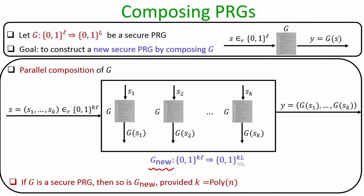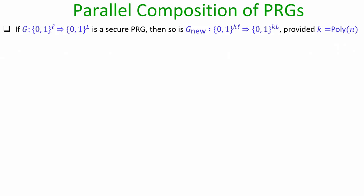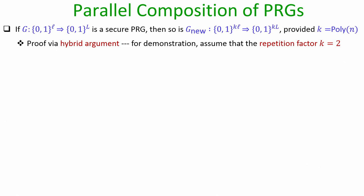We want to prove that if k is a polynomial function of the security parameter n, and if the existing algorithm G is a secure PRG (by either the indistinguishability-based definition or next bit predictor definition), then the new algorithm G_new obtained by composing PRGs in parallel is also a secure PRG. For this we introduce a new proof strategy called the hybrid argument, a very popular strategy used extensively in modern cryptography.